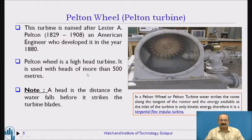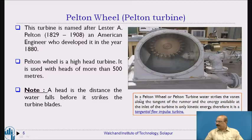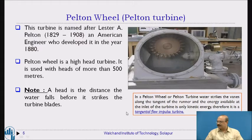Head is the distance the water falls before it strikes the turbine blades. In a Pelton wheel or Pelton turbine, water strikes the vanes along the tangent of the runner, and the energy available at the inlet of the turbine is only kinetic energy. Therefore it is called a tangential flow type of turbine.